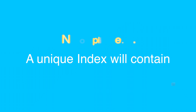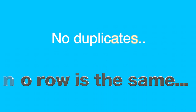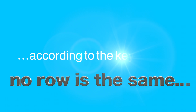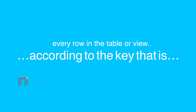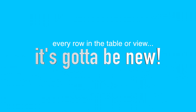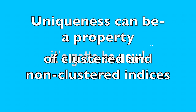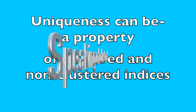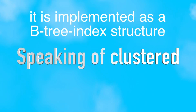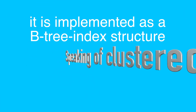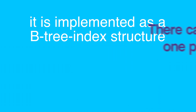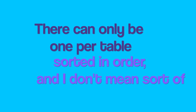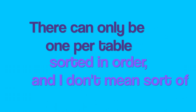A unique index will contain no duplicates, no rows the same. According to the key, every row in the table or view, it's gotta be new. Uniqueness can be a property of clustered and non-clustered indices. And speaking of the cluster, it is implemented as a B-tree index structure. There can only be one per table, sorting in order, and I don't mean sorta.